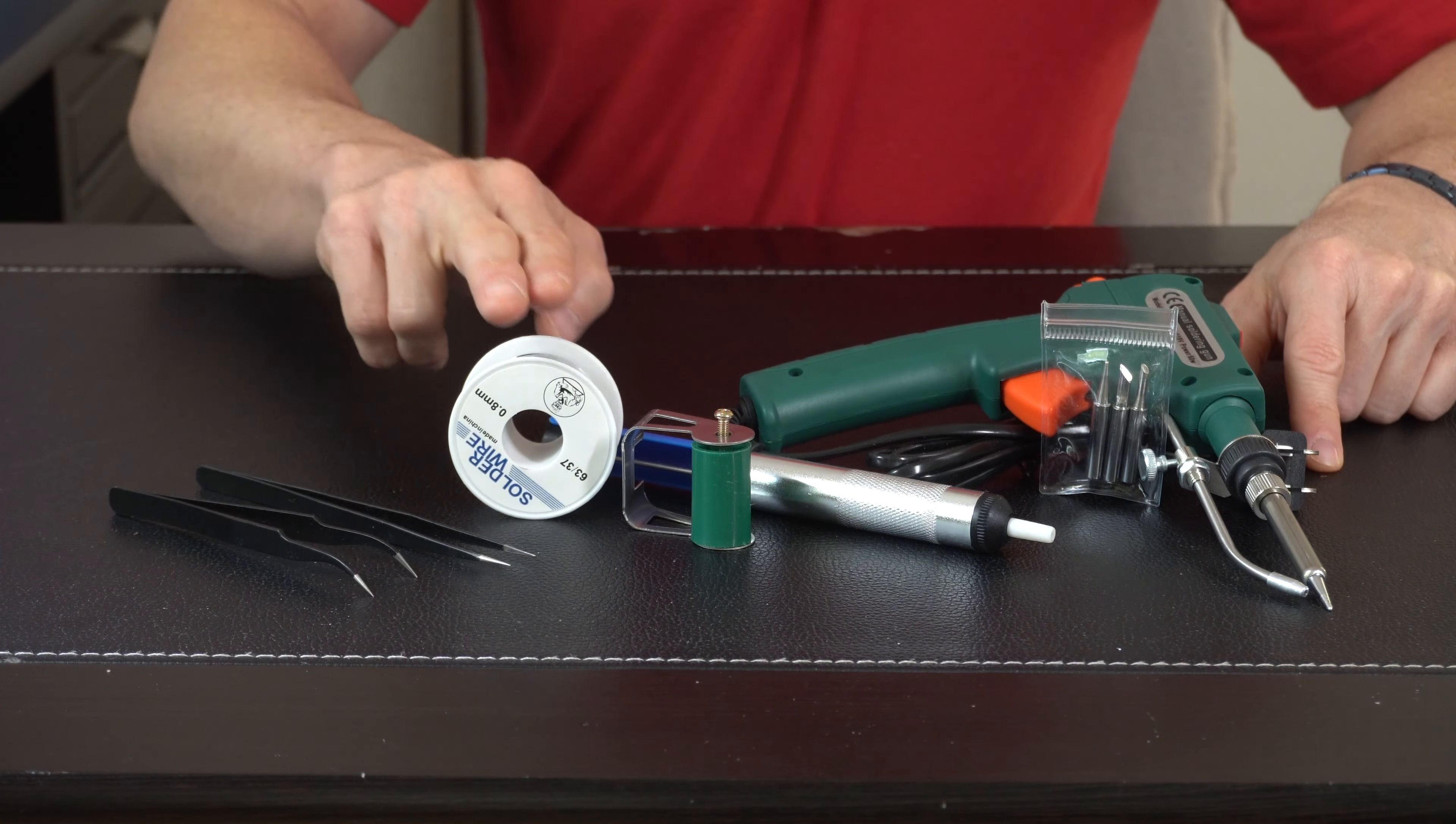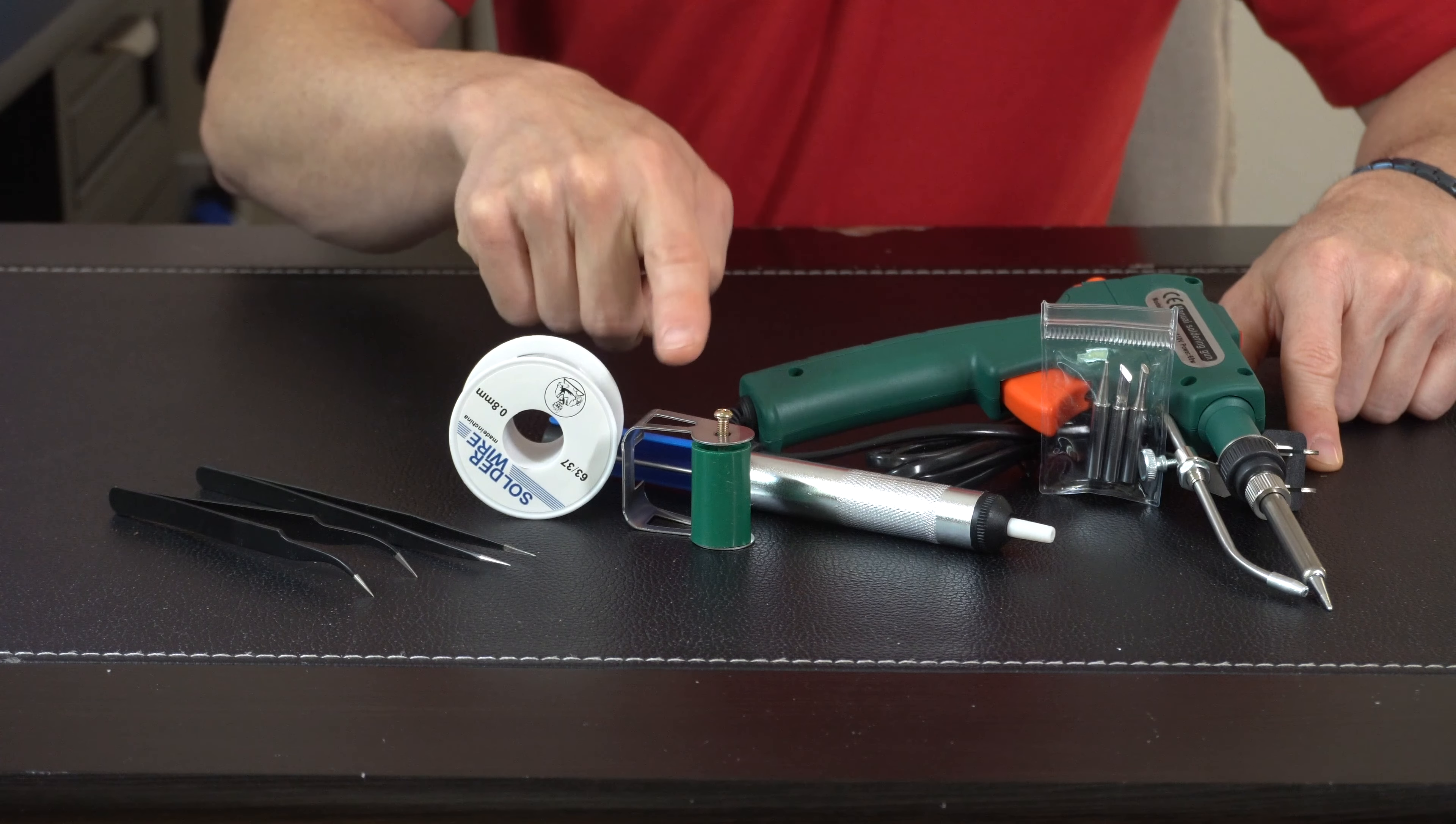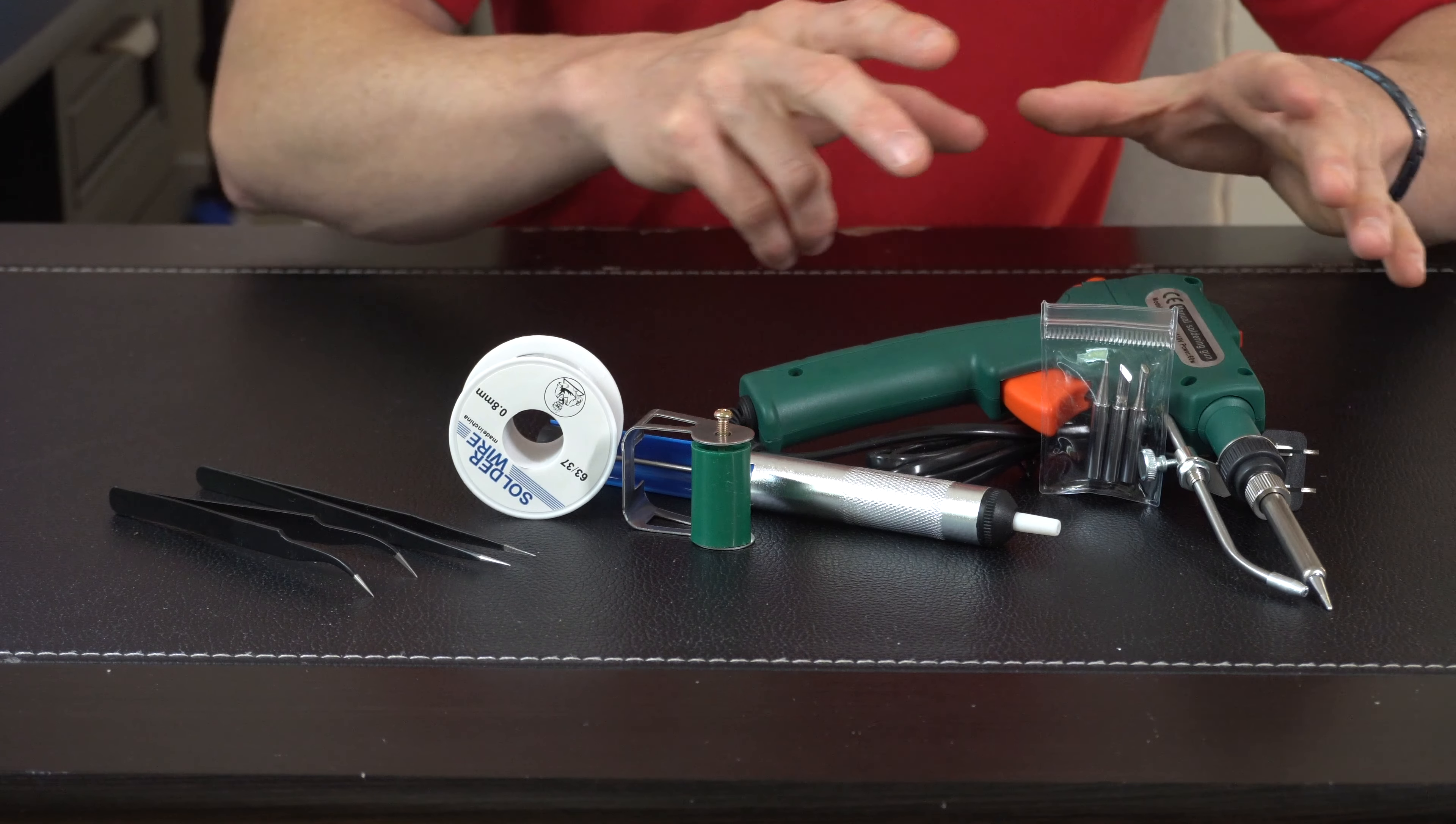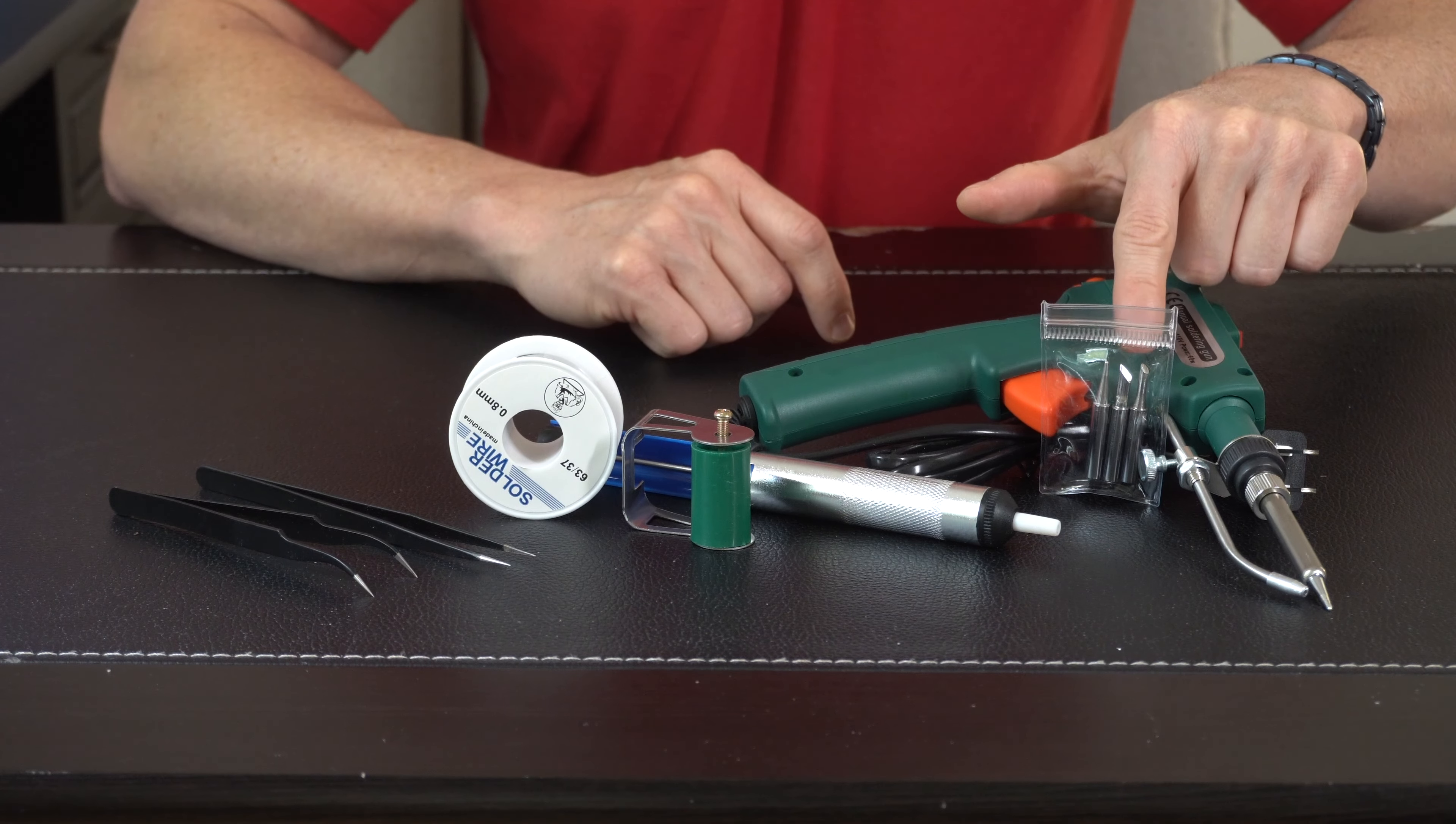So this is everything in the box. We've got a set of tweezers, some solder, a spool holder because this will be able to mount on the back, a little solder sucker right here in case you need to remove or repair anything. Then we have the soldering gun included with a couple additional tips.